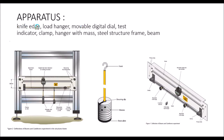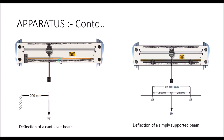For the experiment we will require a knife edge, load hanger, movable digital dial test indicator, clamp hanger with masses, steel structure frame, and beam. We have the beam here — it is a golden color and we have two types: steel or aluminium beams in the lab. We can determine the deflection on either the steel beam or the aluminium beam.